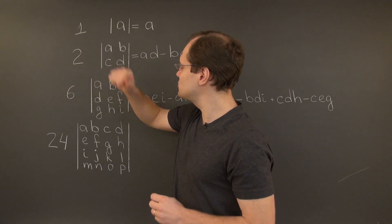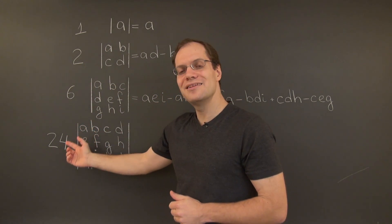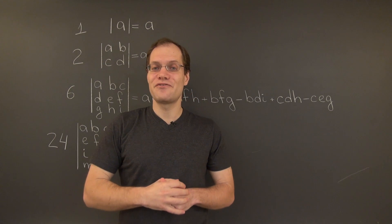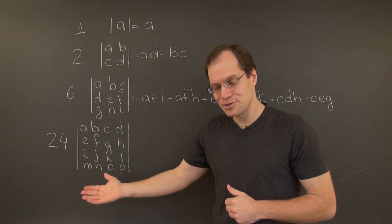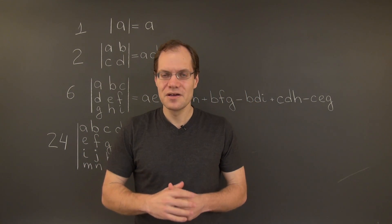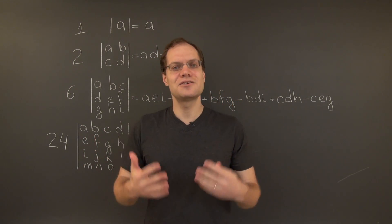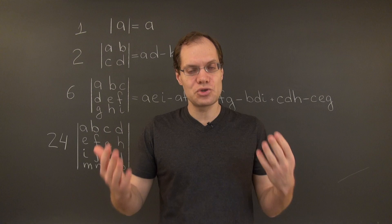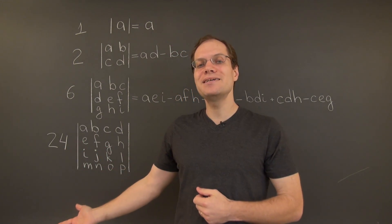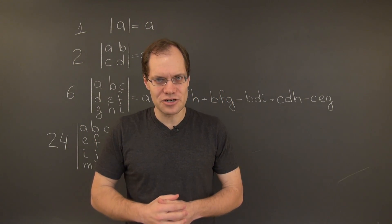This is 1 times 2 times 3. And this is 1 times 2 times 3 times 4. So if this pattern persists, and it does, the 5x5 determinant will have 120 terms. The 6x6 will have 720 terms. The 10x10 will have over 3.5 million terms.